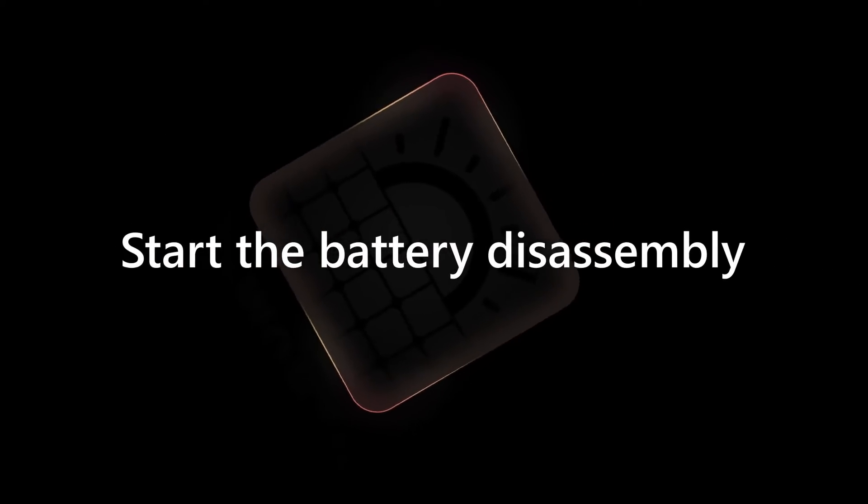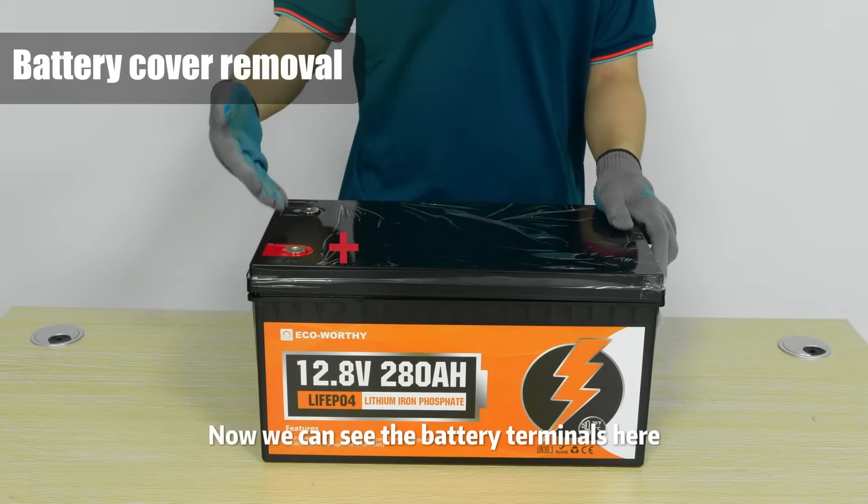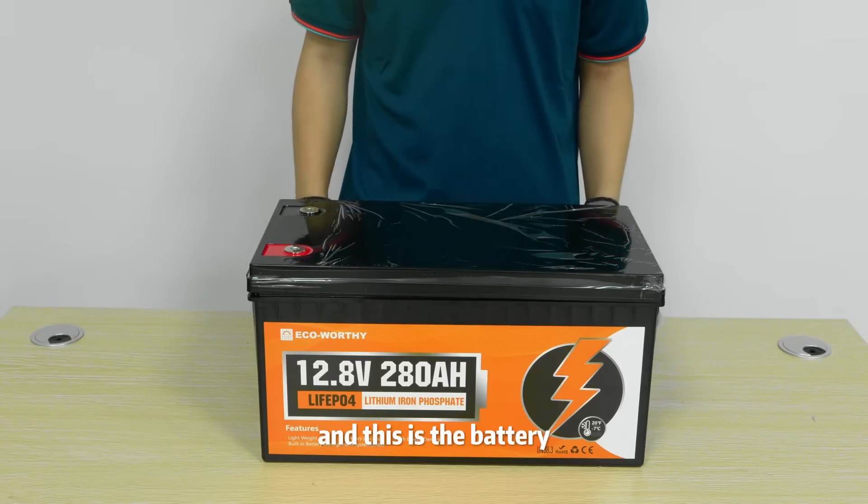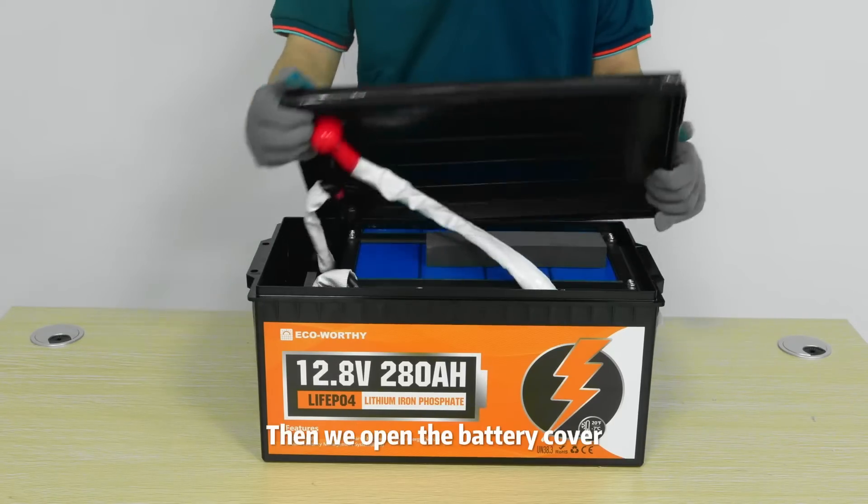Start the battery disassembly. Now we can see the battery terminals here, and this is the battery. Then we open the battery cover.